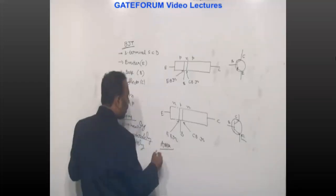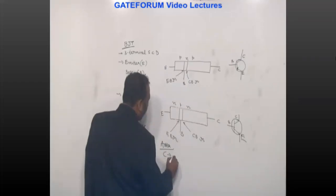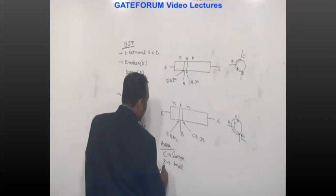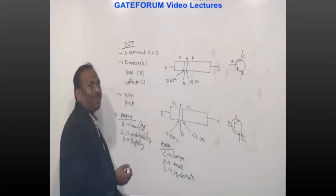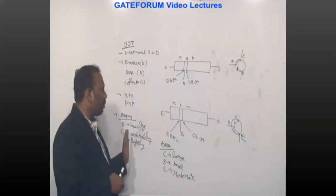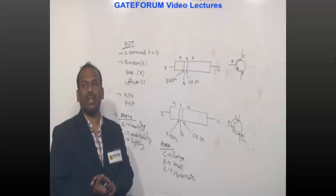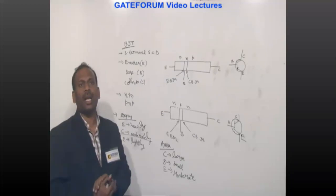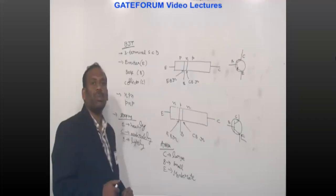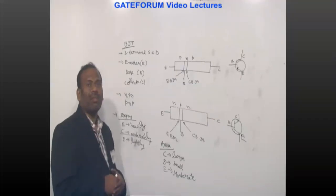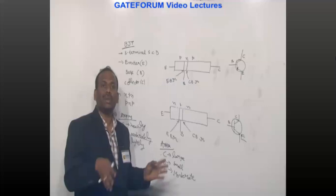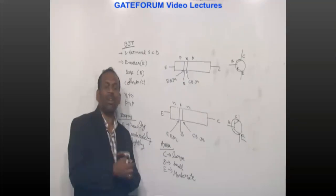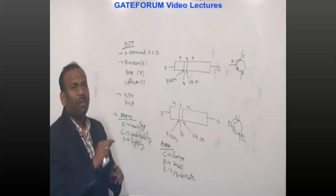Area-wise, the collector has the largest area, the base has the smallest area, and the emitter has a moderate area. The base must be thin so that charge carriers emitted by the emitter immediately reach the collector. A small base width minimizes recombination.